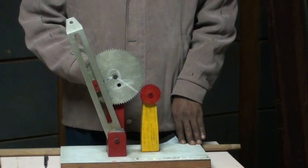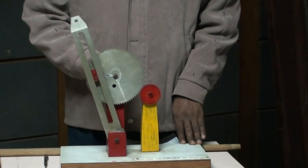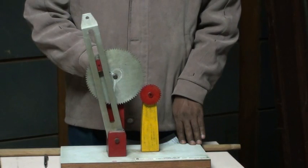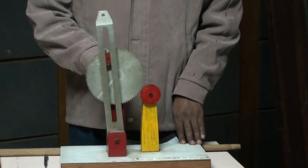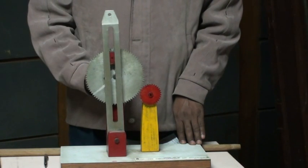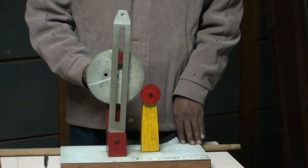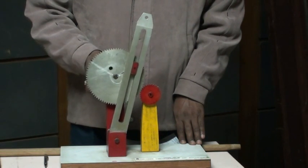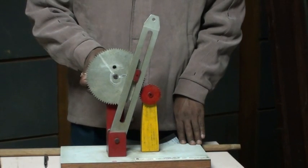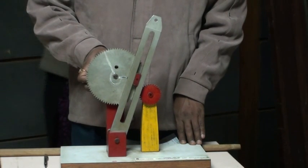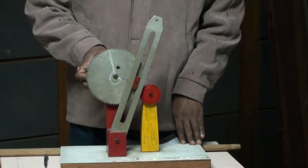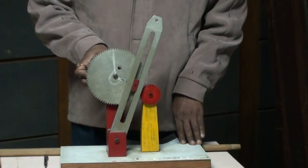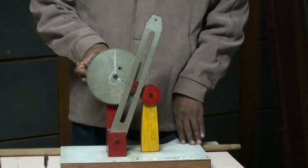As crank rotates, the lever is moving forward, giving forward power stroke. Now you can see that the lever is at the another extreme end.